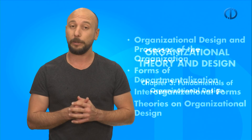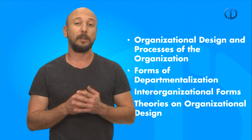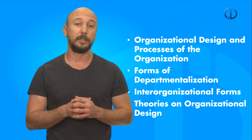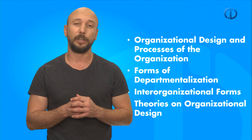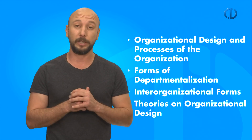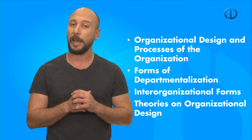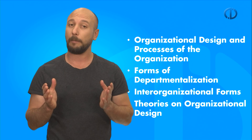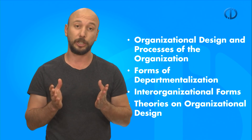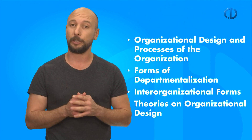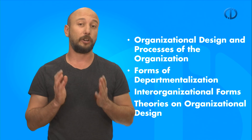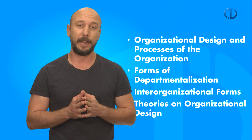In this chapter, we start with explaining organizational design and processes of the organization. Then forms of departmentalization will be analyzed. Then we'll talk about the essentials of interorganizational forms, and we'll finish up with theories on organizational design.